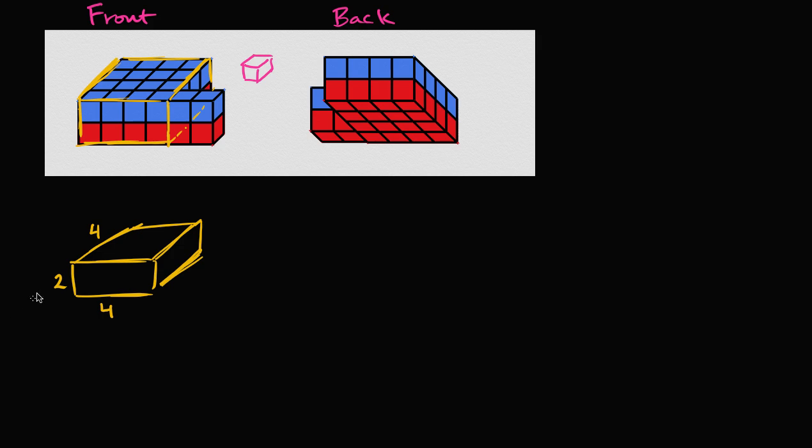And so what's the volume of this yellow part? Well the volume is just you multiply these three dimensions. The length times the width times the height. So the volume is going to be four times four is 16 times two is 32. But we're not done. That's just the volume of this yellow part.